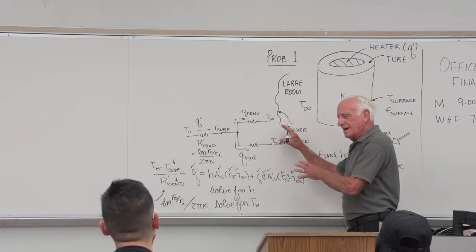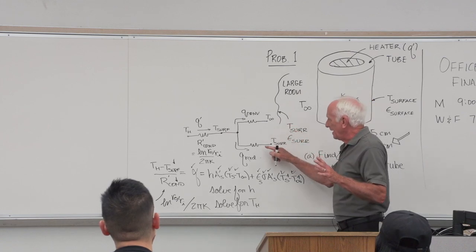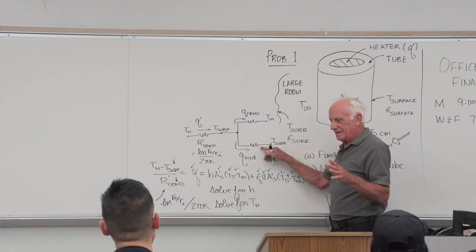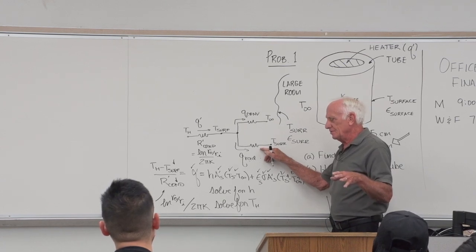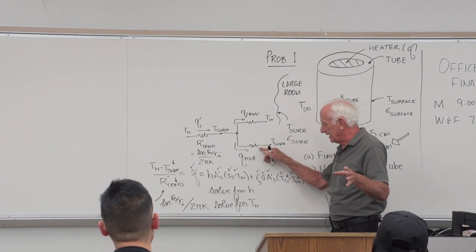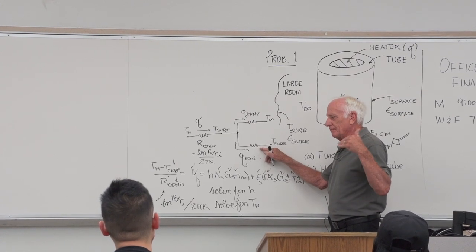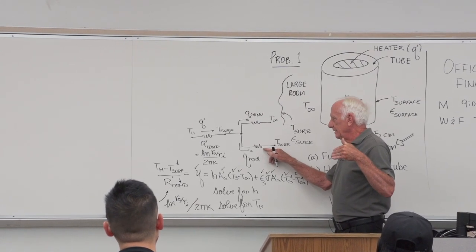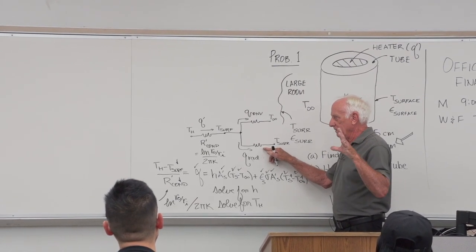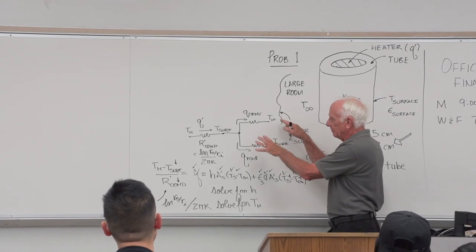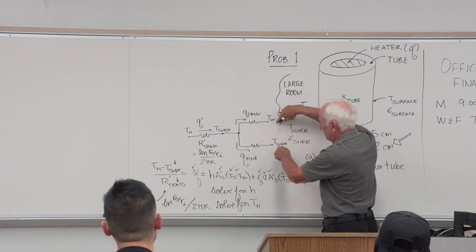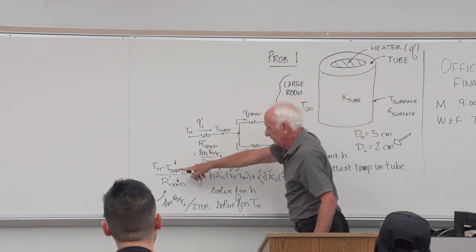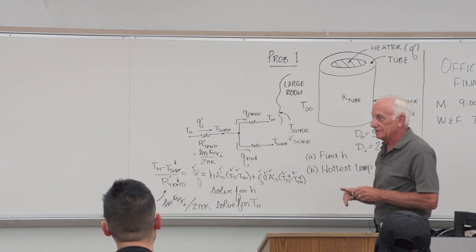You don't need the circuit diagram. In fact, you don't want a resistance for the radiation term — it complicates the problem. It's possible, but it doesn't make for a clean solution. The circuit is good as a roadmap showing all the heat comes in, splits, and ends up either at the walls or the air. But use the direct equations to solve for the two unknowns.